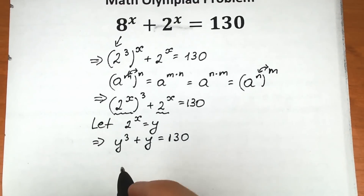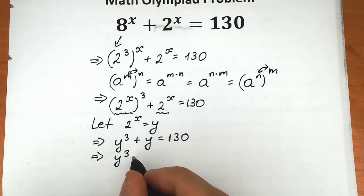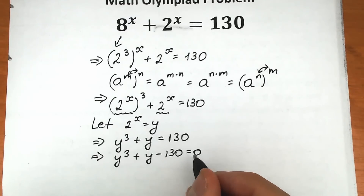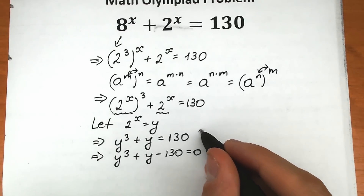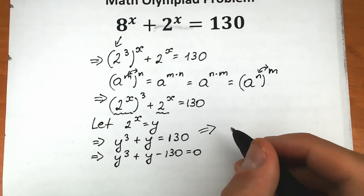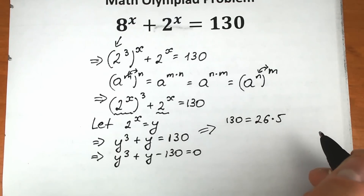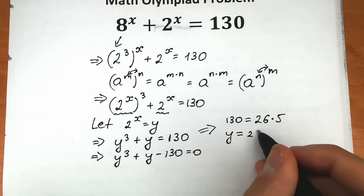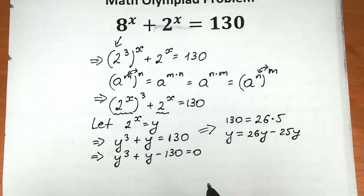Let's solve this a little bit. First of all, let's bring the constant from right to left. So we have y cubed plus y minus 130 equal to zero. Right now, 130 can be written as a product: 130 equals 26 times 5. So let's write y as 26y minus 25y. Let's substitute that in — it changes nothing, but in the future it helps us a lot.